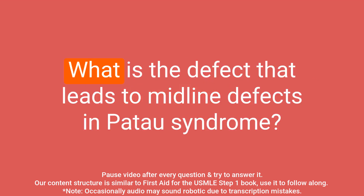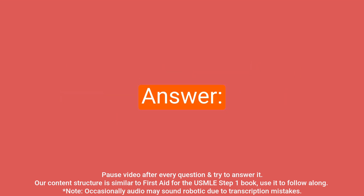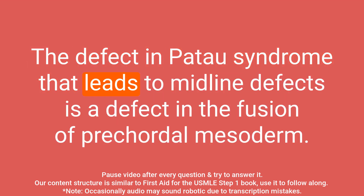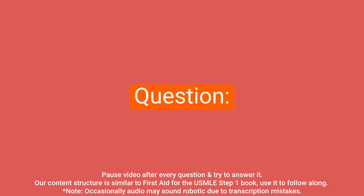Question: what is the defect that leads to midline defects in Patau syndrome? Answer: the defect in Patau syndrome that leads to midline defects is a defect in the fusion of prechordal mesoderm.